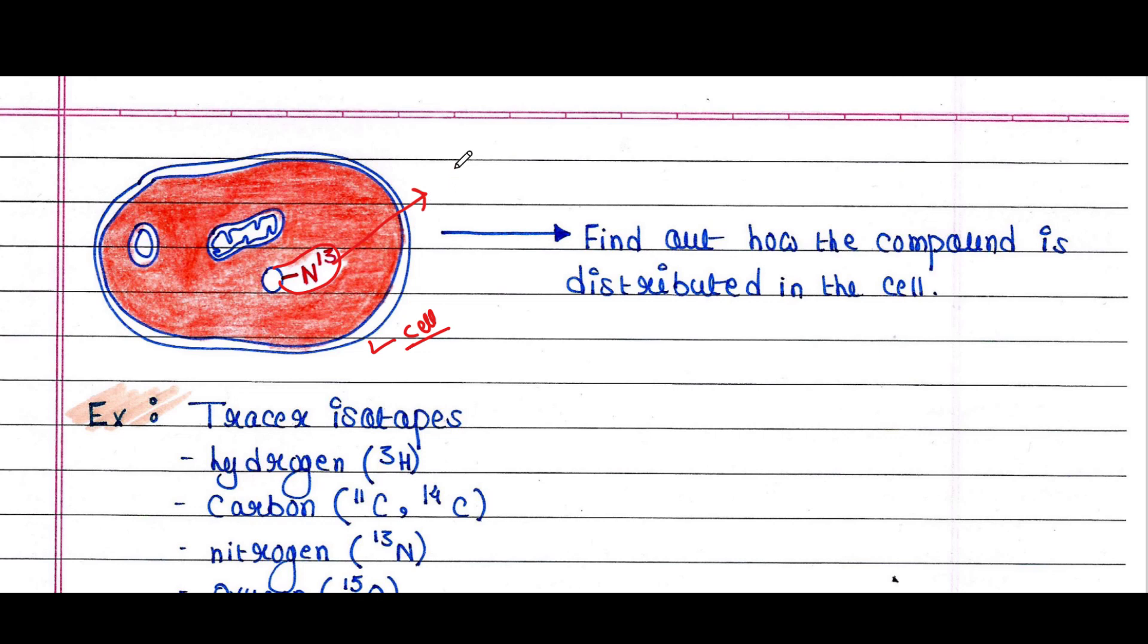So this compound is radiolabeled. In this case we have used nitrogen 13 (N13). So we can introduce this radioactive compound in this cell and we can find images and predict where this radioactive labeled compound is distributed.